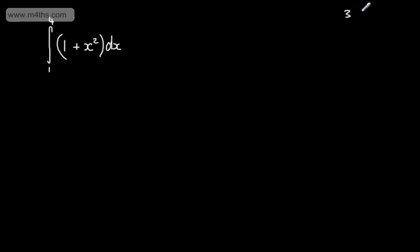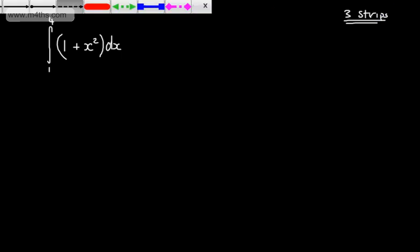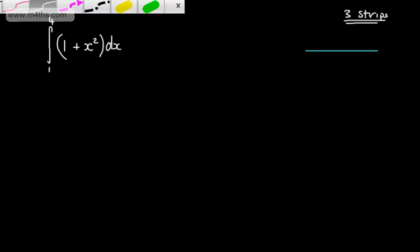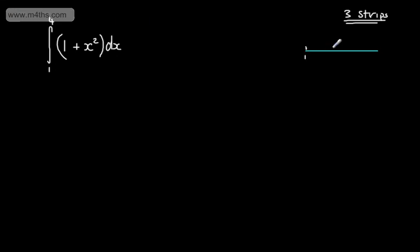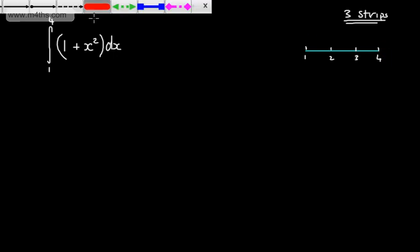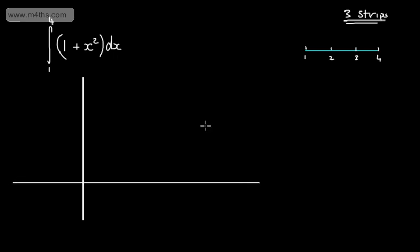What I want to do is find the area under the curve from 1 to 4 of 1 plus x squared. I'm going to consider 3 strips. Clearly, the more strips or rectangles I have, the more accurate my estimate will be. So I'll take the x-axis and split this up — starting at 1 and ending at 4 with 3 strips, giving ordinates at 1, 2, 3, and 4. Let's draw a quick sketch using a coordinate axis.